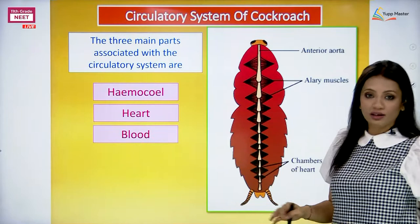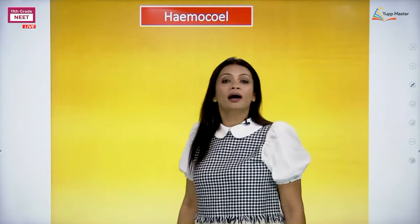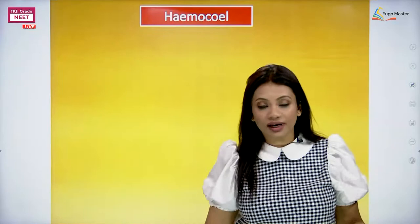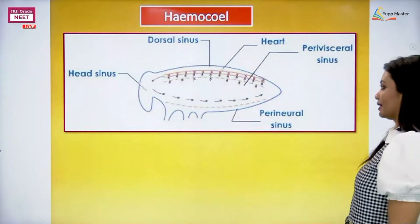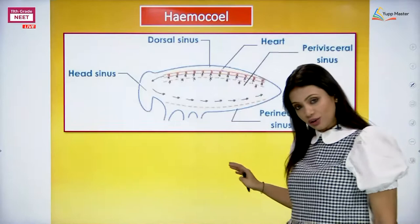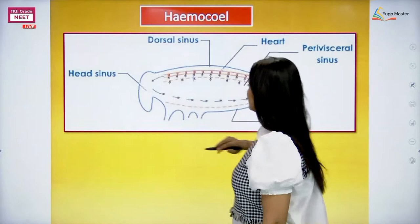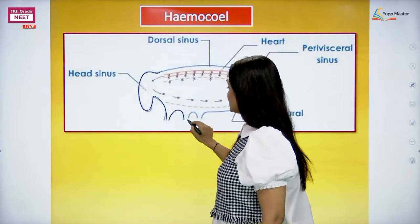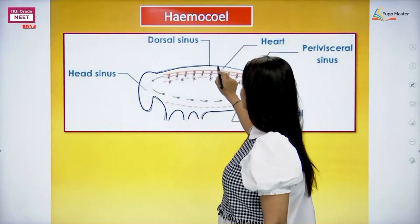Now we are going to begin this whole session of the circulatory system by speaking about the hemocoel. Hemocoel is just another name for the whole body cavity because it is going to be filled with blood or the circulating fluid of the cockroach. Look at this diagram - it is a very important diagram. If you understand this diagram, the circulation of the cockroach becomes very simple. This whole outline that you are seeing is the whole hemocoel, meaning this is the whole body wall of the cockroach and everything inside is the hemocoel.